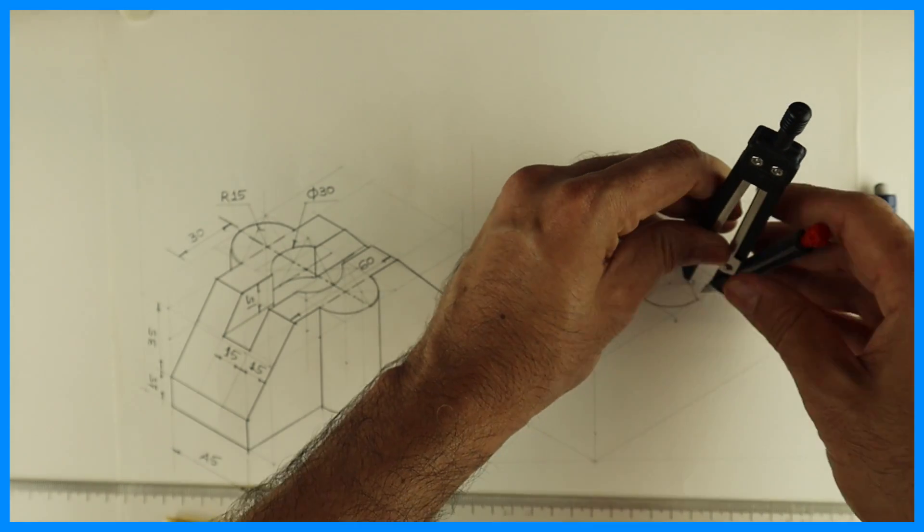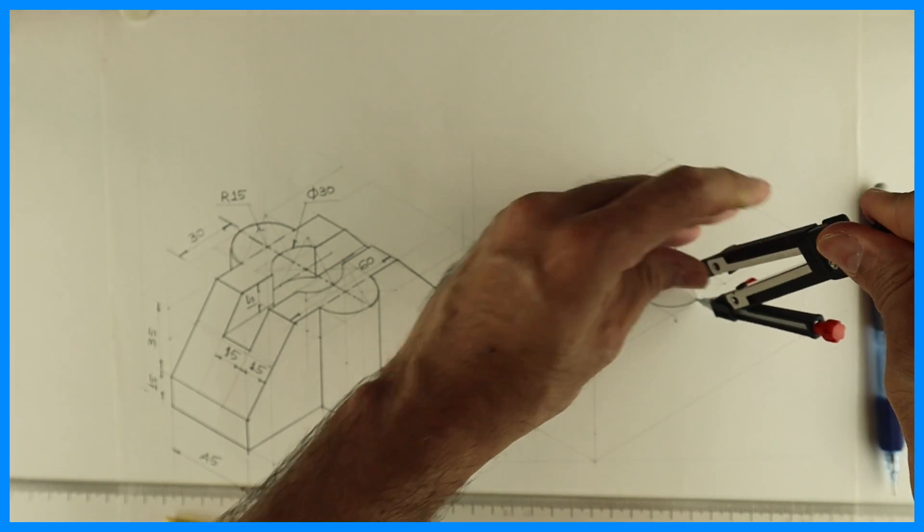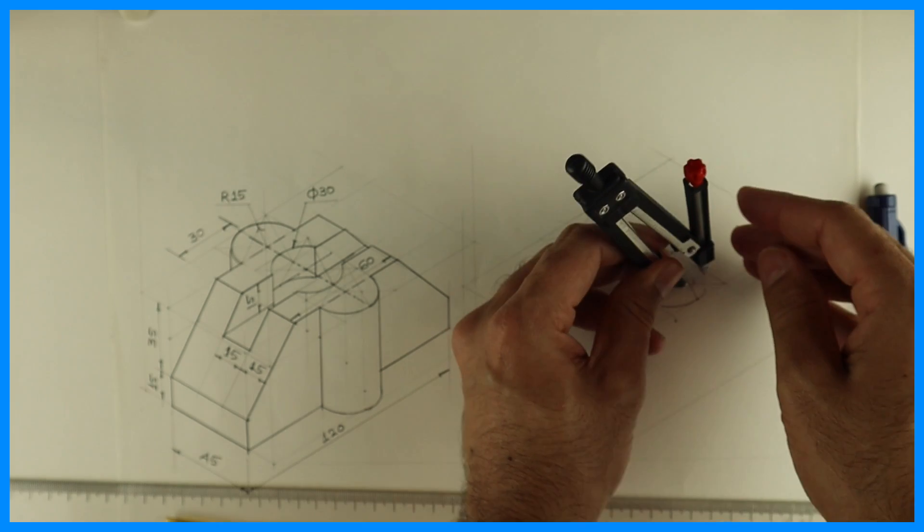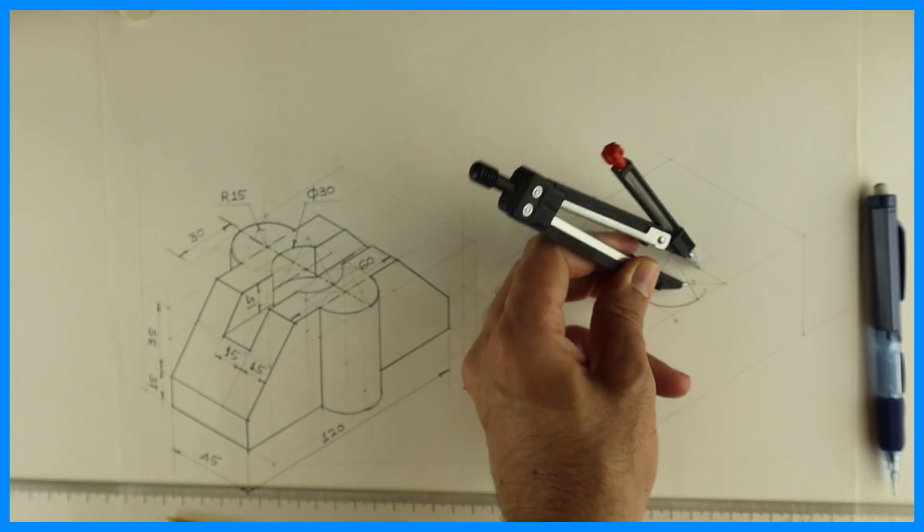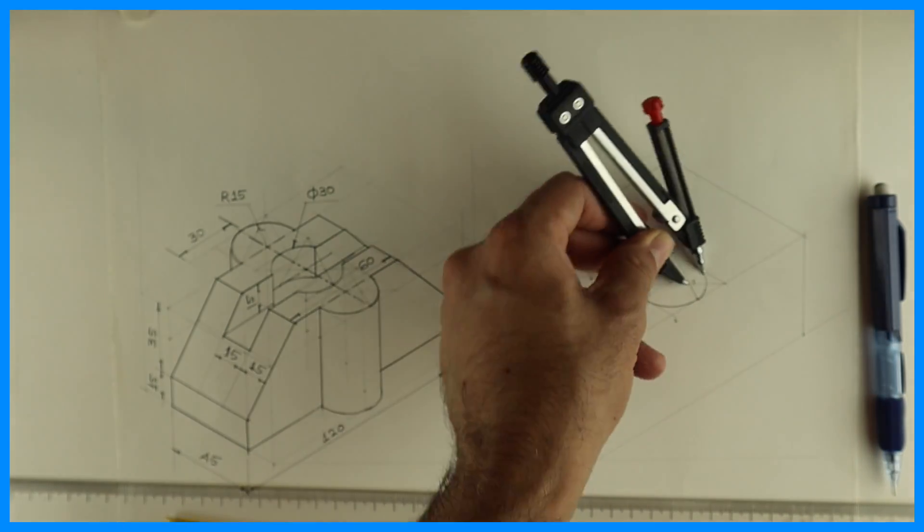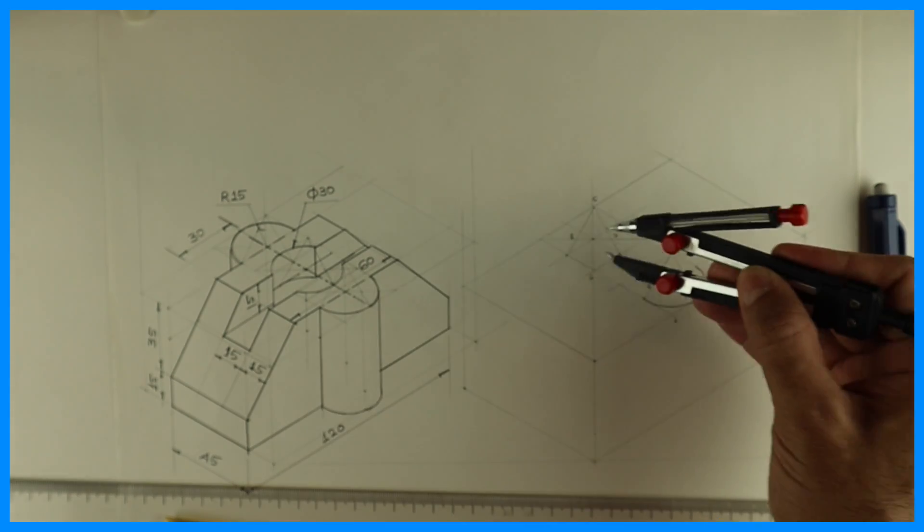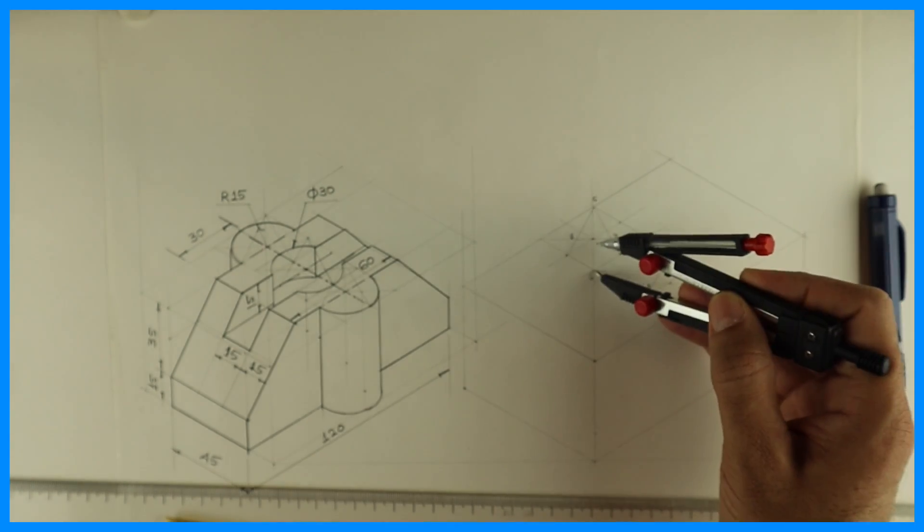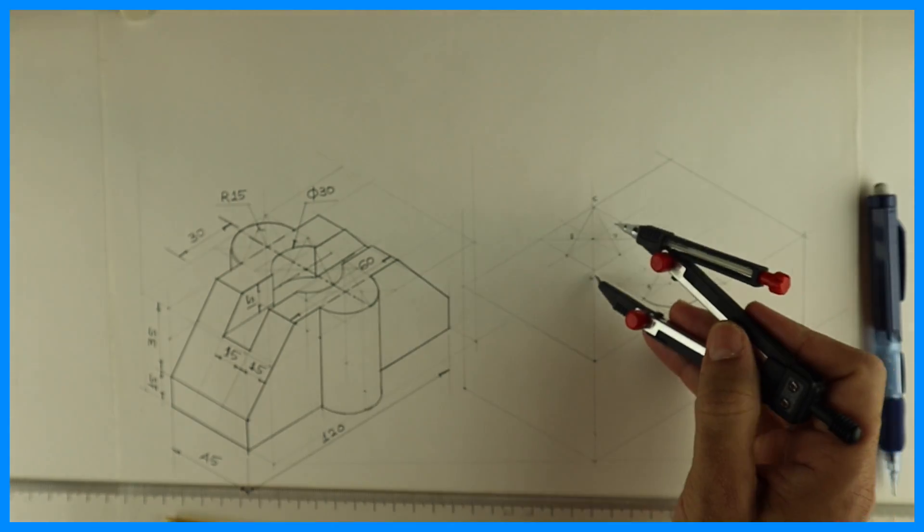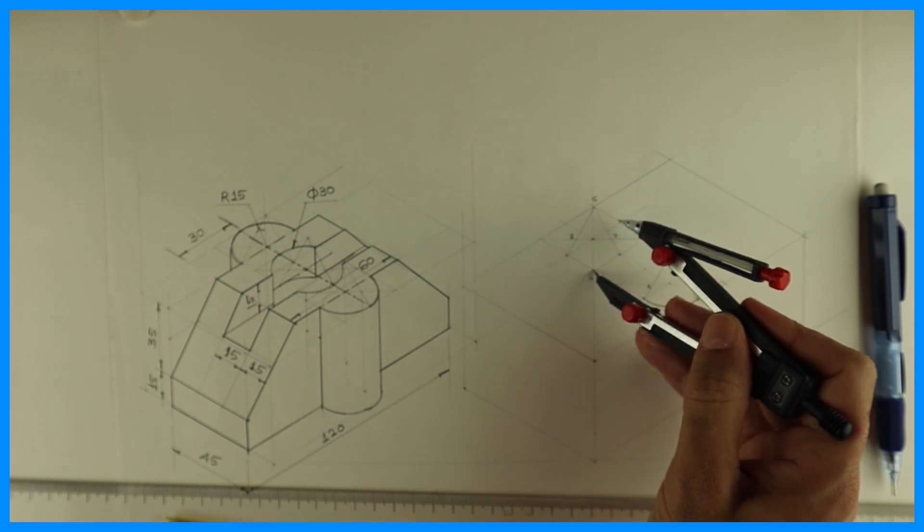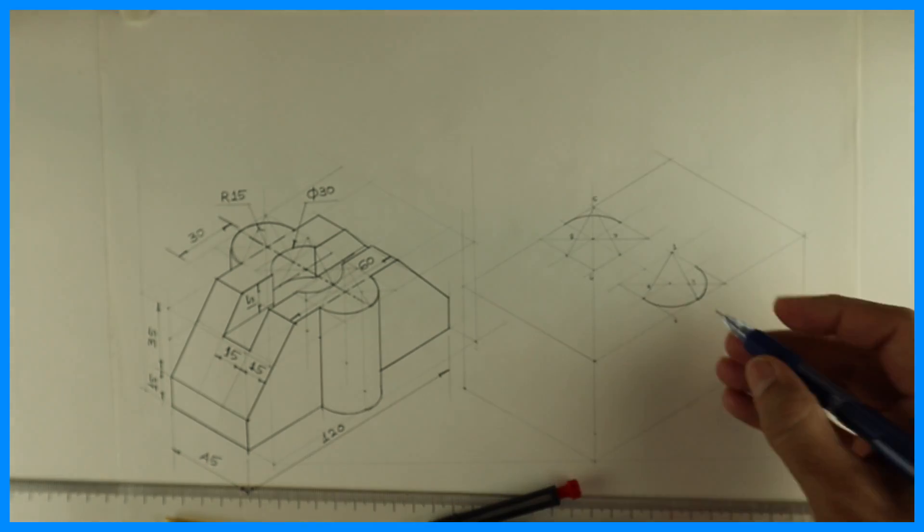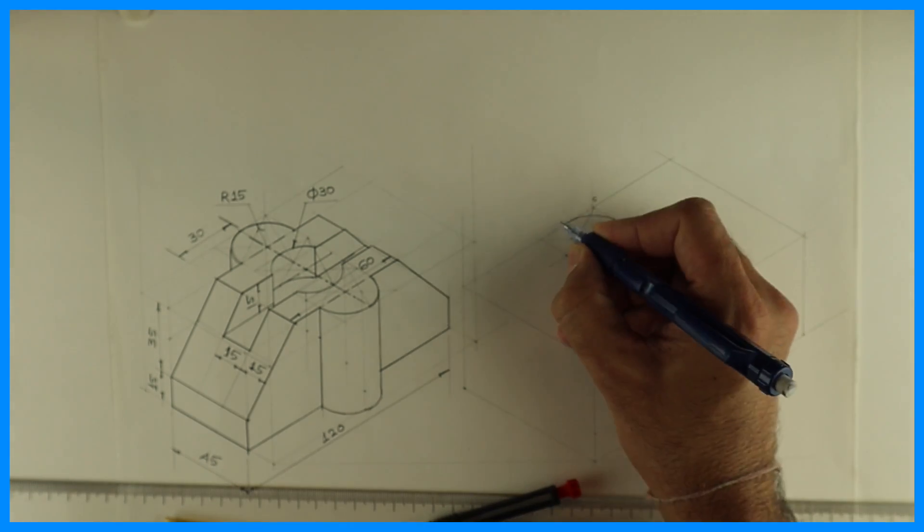Same way, this point 3, point number 3 to M and we can draw this arc. Same way from here. From point 6. This is M, this is M, this is also M.